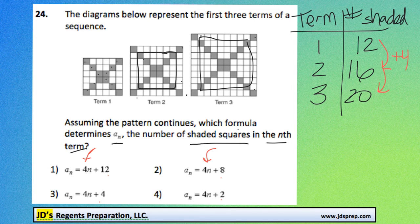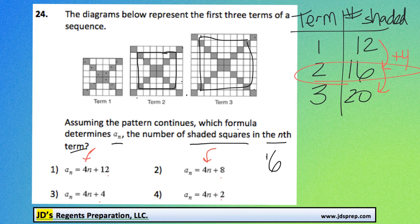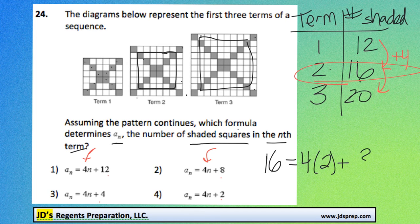Now to find the constant, we can pick one of these combinations. Let's pick the 2, 16, and we can write out that 16 has to equal 4 times n, which in this case is 2, plus something.